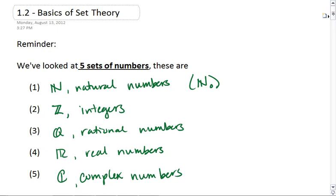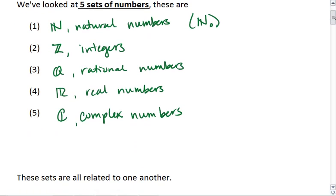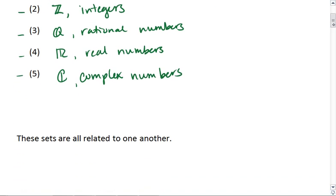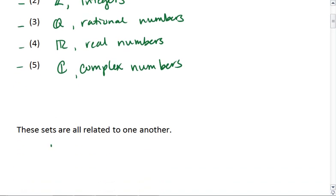We found that all of these sets are related to one another. In fact, the natural numbers is a subset of the integers, which is a subset of the rationals, which is a subset of the reals, which is a subset of the complex numbers. And the way we note that is we say that our natural numbers are a subset of our rational numbers, are a subset of the real numbers, which is a subset of the complex numbers.